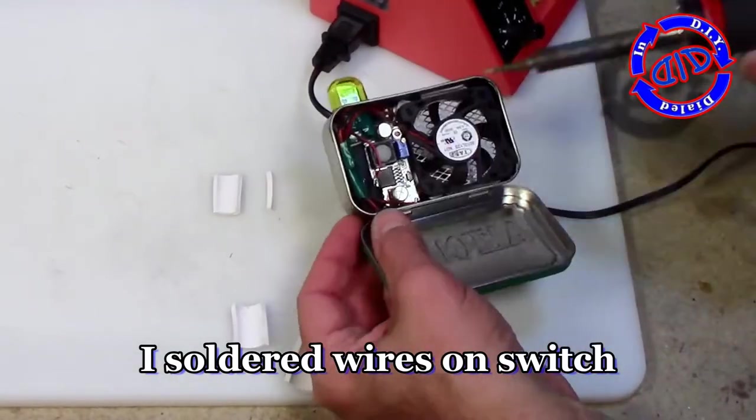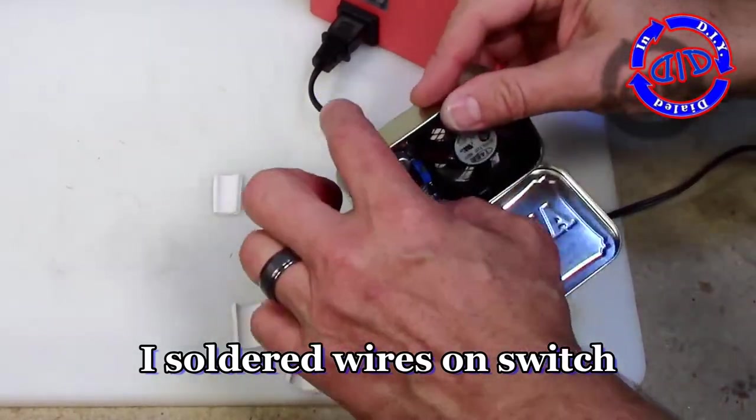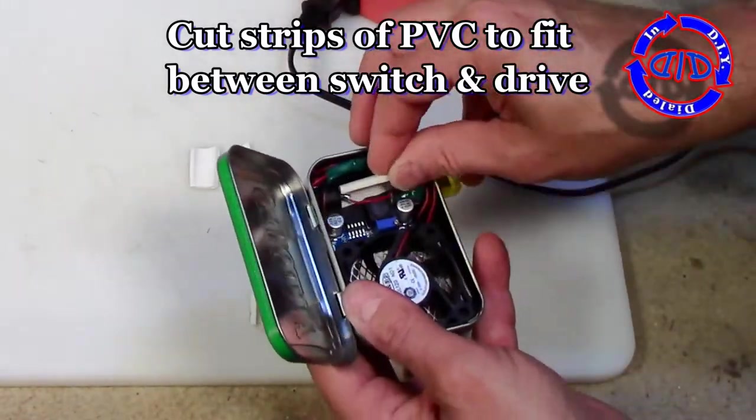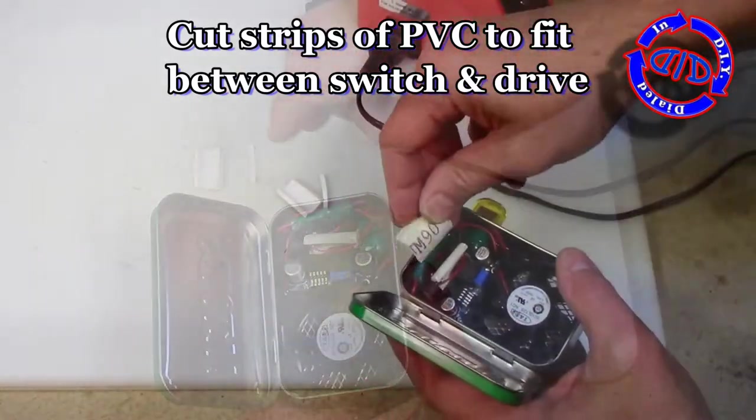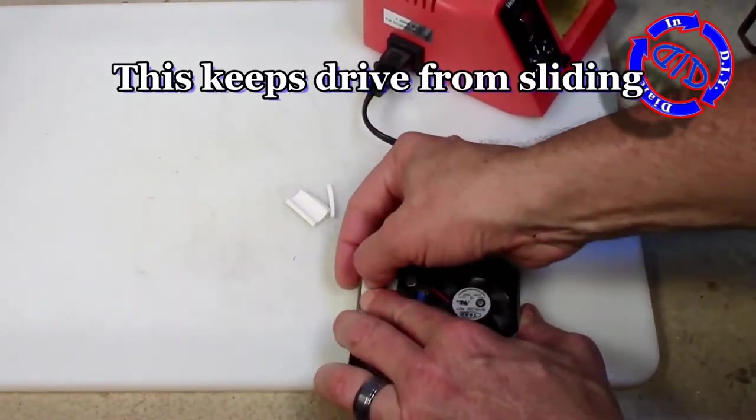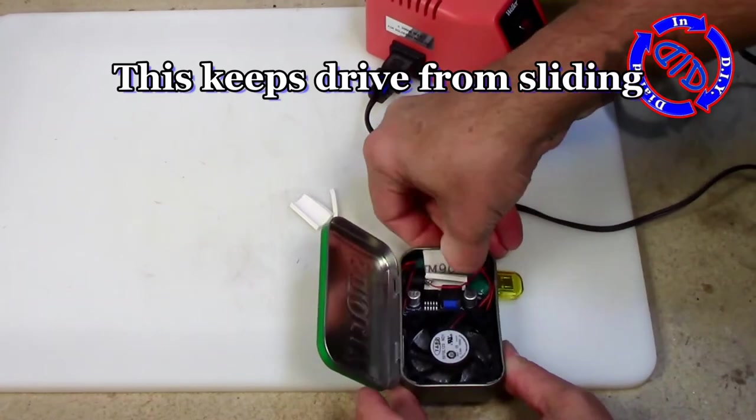As I mentioned previously, I did solder the wires to the switch, but once this was done, I noticed that my little thumb drive could move back and forth a little bit. So I took a couple pieces of PVC, cut them to the distance between the switch and the thumb drive, and laid them in sideways to keep everything secure.